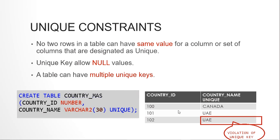One important thing about unique constraint is that it allows NULL values. In Oracle database you can have any number of NULLs for a unique column. NULL is absence of data — it's not blank space or zero, it means the data is absent. Since NULL is not equal to NULL, no two NULLs are considered equal. In SQL Server they allow only one NULL, but in Oracle you can enter multiple NULLs because each NULL is still considered unique.